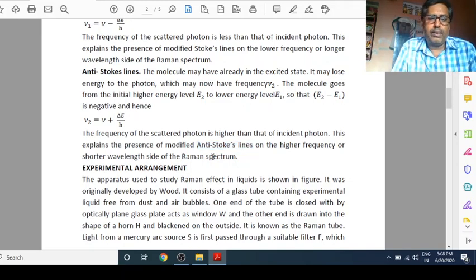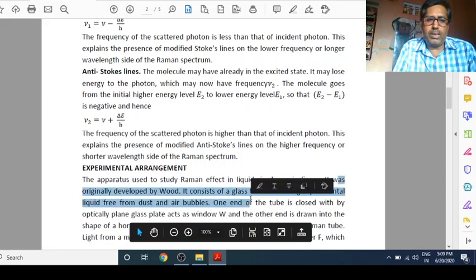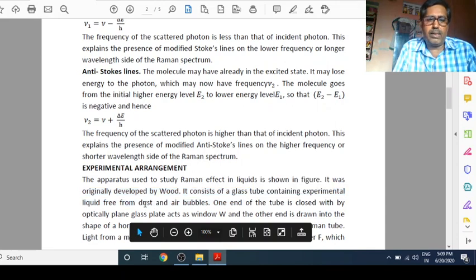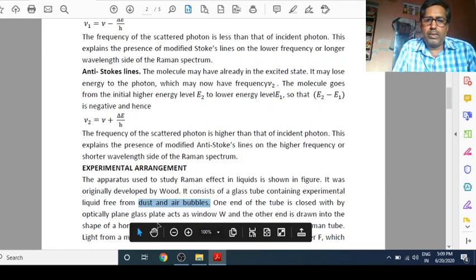I hope you have understood. Now, we focus on the experimental arrangement. The apparatus used to study Raman effect in liquid is shown in figure. It was originally developed by Wood. It consists of a glass tube containing experimental liquid free from dust and air bubbles. Free from dust and air bubbles means transparent liquid. One end of the tube is closed with optically plain glass flat.